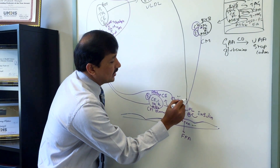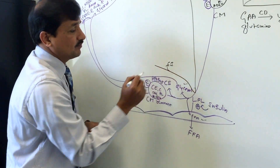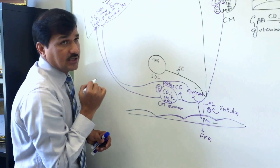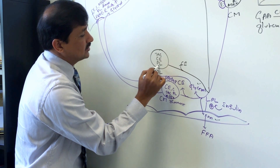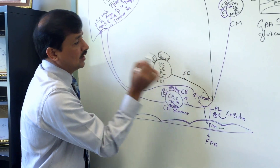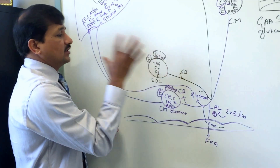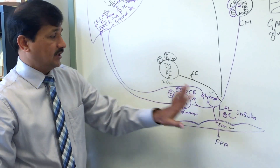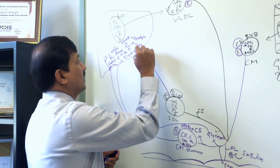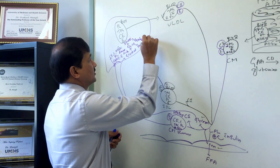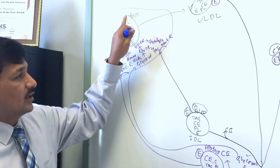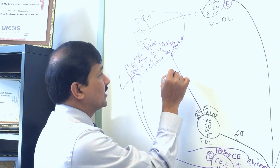At some point, ApoC2 is released back to HDL, and the molecule is now called IDL. IDL still has some triacylglycerol, cholesterol ester, phospholipid, vitamin E, ApoB100, and ApoE on the surface — but no longer ApoC2, so LPL no longer acts on it. IDL has three fates. The first fate: it can be taken up by the liver via ApoE receptors, also called remnant receptors — similar to chylomicron remnant uptake — and all its contents are delivered to the liver.